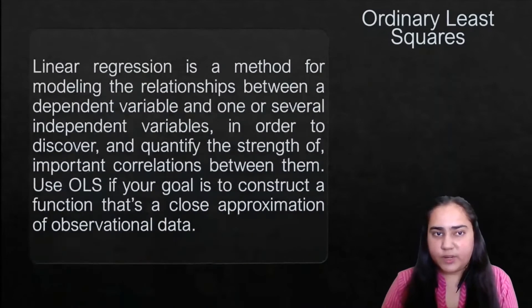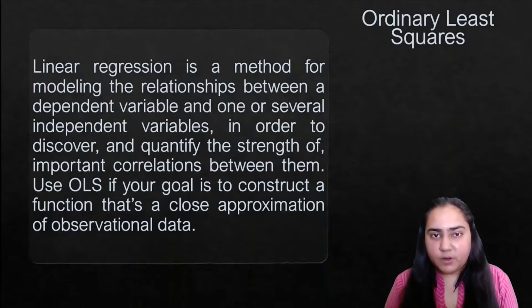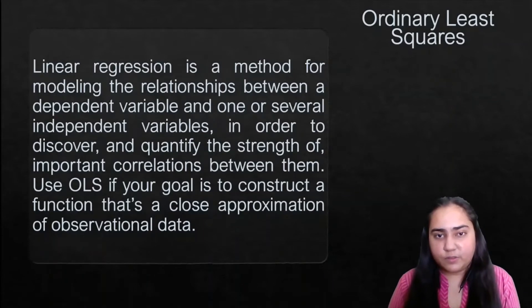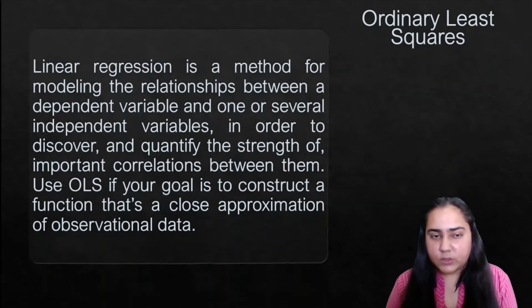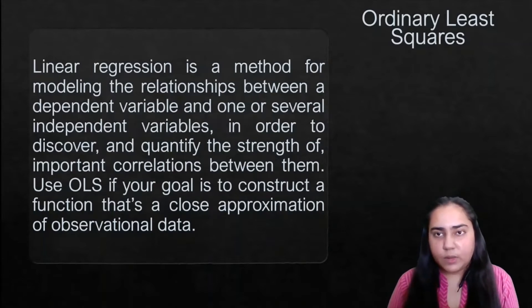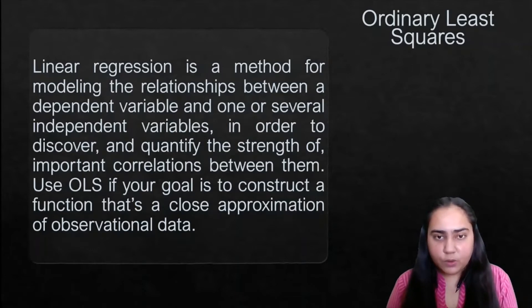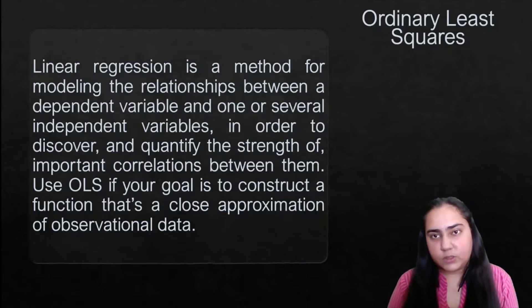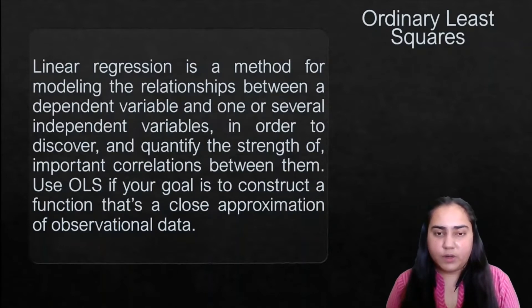What are ordinary least squares? You already know that linear regression is a method for modeling relationships between a dependent variable and one or several independent variables, in order to discover and quantify the strength of important correlations between them. You should use OLS to fit this line if your goal is to construct a function that's a close approximation of the observational data — if you want your line to be really precise and a very close approximation of where your actual data points lie.